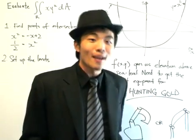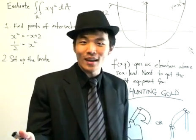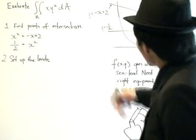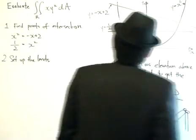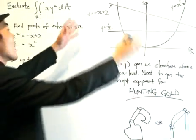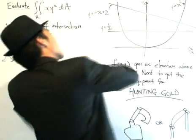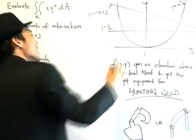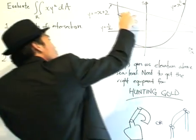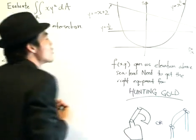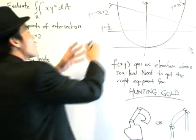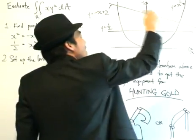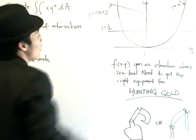This is a double integral problem framed in a nice way, so I hope you all enjoy it. Here's the objective. We've got a certain map, and our boss tells us there's gold hidden somewhere in this region over here — the region defined or bounded by these lines and curves. This is the region we want to explore.